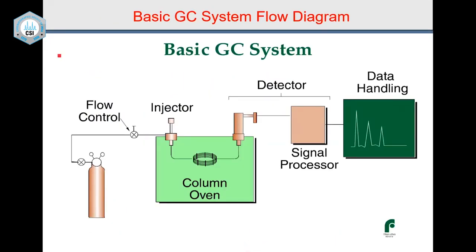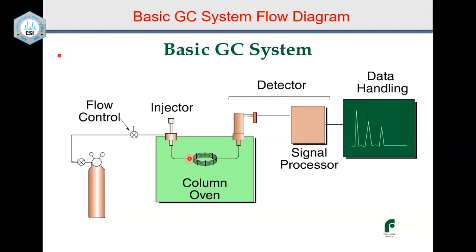Yesterday we talked about the mobile phase being a gas, then the column oven. The three important parts are the injector, the column, and the detector — with the column being the heart of the instrument because that is where the separation takes place. From the detector, you get the signal that gives you the GC chromatogram.